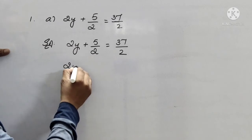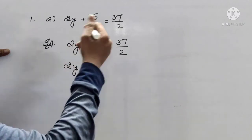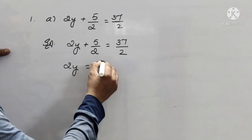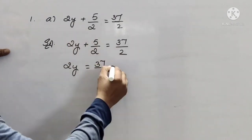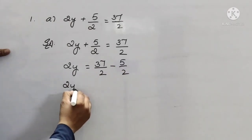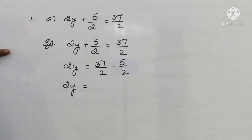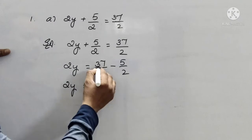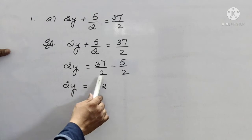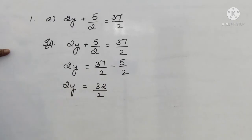See here how I am solving the value for y. 2y plus 5 by 2 equals to 37 by 2. Now, 2y equals to — I am sending all the numbers to the right hand side. So, 37 by 2, this plus 5 by 2 will become minus 5 by 2. Both denominators are same, so 2y equals to 37 minus 5 by 2, which is 32 by 2.